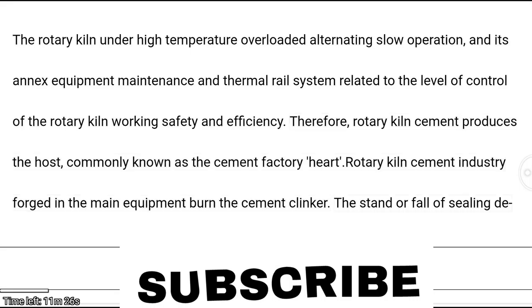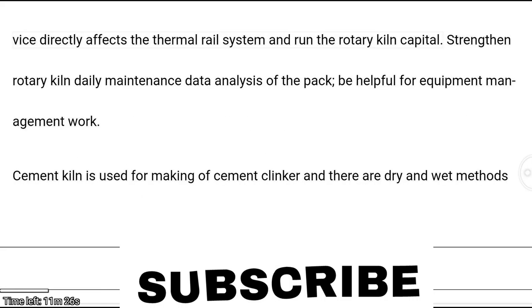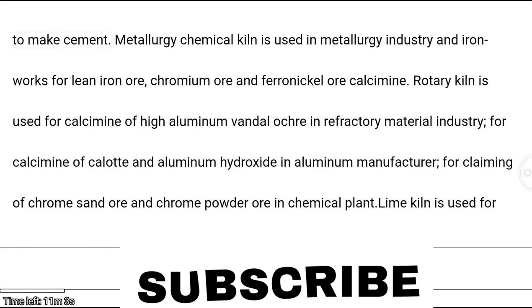The standard condition of the sealing device directly affects the thermal system and operation of the rotary kiln. Strengthening daily maintenance and data analysis is helpful for equipment management. Cement kiln is used for making cement clinker using dry and wet methods. Metallurgical and chemical kilns are used in the metallurgy industry for lean iron ore, chromium ore, ferronickel, and calcining.